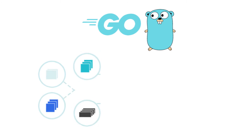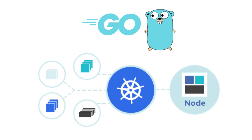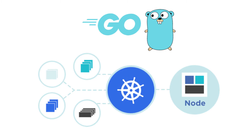First, we run on the modern cloud. We're built in Go and deployed on Kubernetes, meaning we're extremely fast and scalable. We can handle thousands of events per second without any problem.